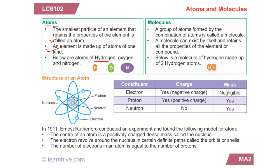Hydrogen, oxygen, and nitrogen — these are considered to be atoms. Now let us talk about what is a molecule. The group of atoms formed by the combination of atoms is the molecule. Whenever there is a combination of one or two atoms, or a group, they form the molecule, and a molecule can exist by itself and retains the properties of the element or the compound.